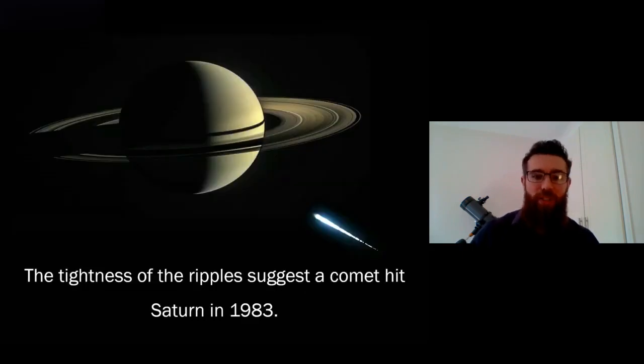Now when that's done for Saturn and those particular ripples that were found, it suggests that a comet hit Saturn in its rings in about 1983. Now no one actually saw that happen because at the time Saturn was not in an observable position from Earth, we couldn't actually see it and we didn't have any spacecraft there at the time. But these ripples suggest that a comet did impact in 1983 because it's the same sort of structures that we had for Jupiter.